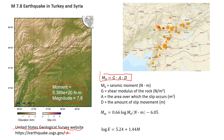Let's see how we can calculate this by ourselves. In the formula we're going to use, there are a few values we need to find. We need to know the shear modulus of the rock, since the rupture happened in rock — the epicenter was about 19 kilometers deep. We also need to know the area over which the slip occurred, and the amount of slip that happened along the fault.